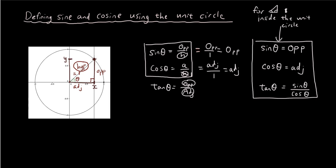Therefore, for this point the x coordinate can be found using cos θ, because cos θ is the adjacent side. And sin θ is the opposite side, which is the same as the y coordinate. So the x coordinate equals the adjacent side, which is cos θ, and the y coordinate equals the opposite side, which is sin θ.